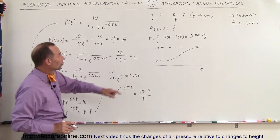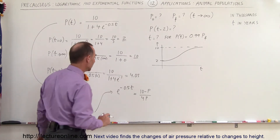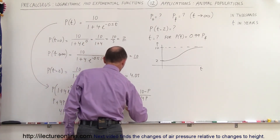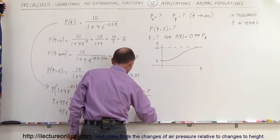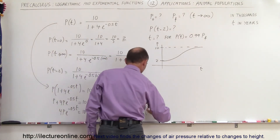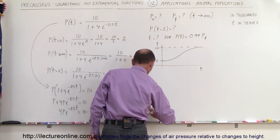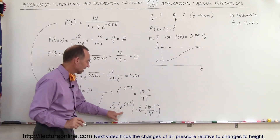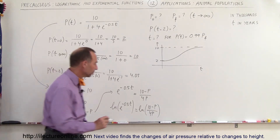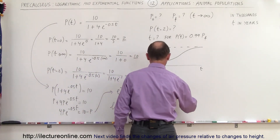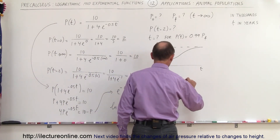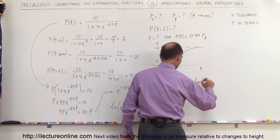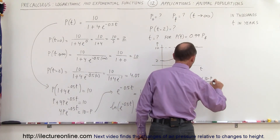Now we can take the natural log of both sides to solve for time. The natural log of e to the minus 0.5t equals the natural log of (10 minus P) divided by 4P. The natural log negates the exponential, so we simply get the exponent back: minus 0.5t equals the natural log of (10 minus P) divided by 4P.